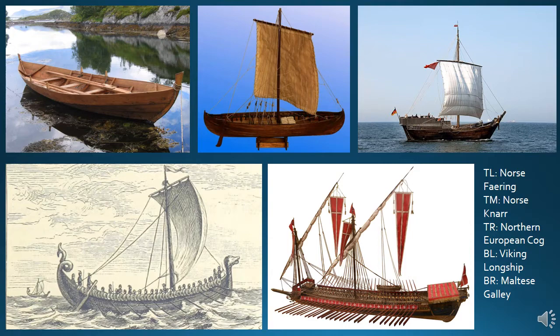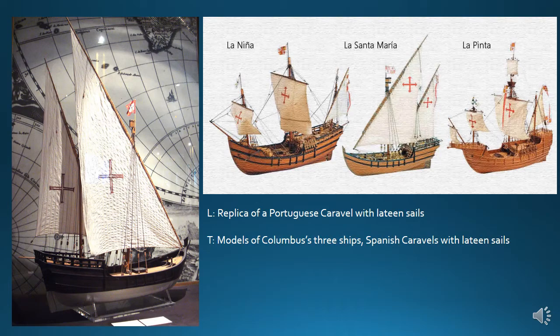Northern European maritime travel, especially in the Baltic Sea, was done mostly on cogs, which were ships that carried the commerce of the Hanseatic League in the late Middle Ages. Additionally, the Italian galley had been a common sailing and rowing ship of the Mediterranean Sea. Immediately prior to the middle of the 15th century, it was the ship that brought Middle Eastern, South Asian, and East Asian goods out of Istanbul and into Southern Europe.